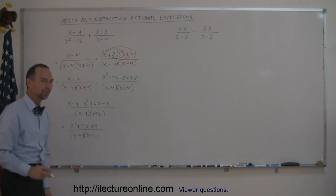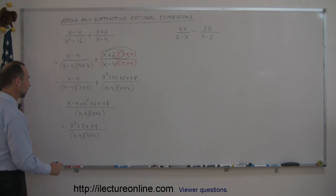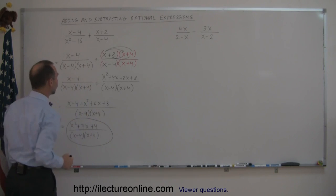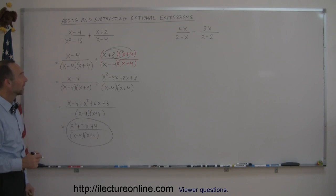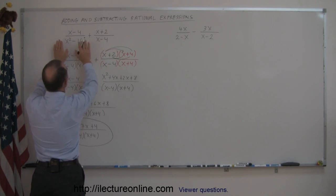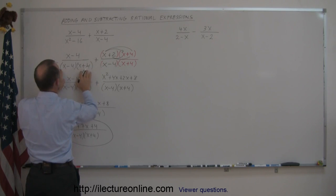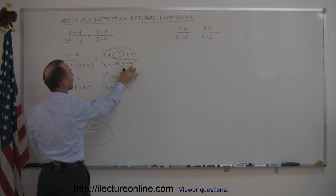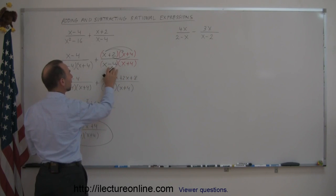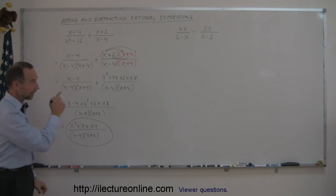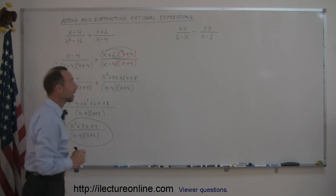Sometimes you can factor the numerator, but that's typically not necessary, so we can call this the final answer — the sum of those two rational expressions. Always make sure you get the same denominator. If you factor first, you can easily see what you're missing. You already have the x minus 4, but you need the x plus 4, and by multiplying the denominator by (x + 4), you must do exactly the same to the numerator.